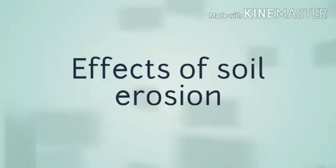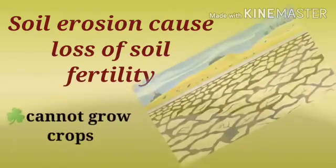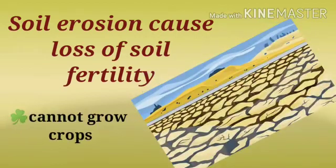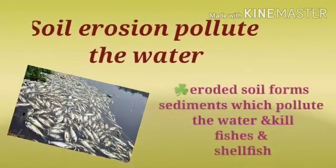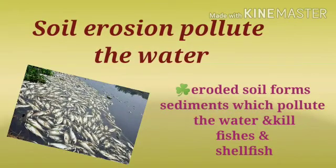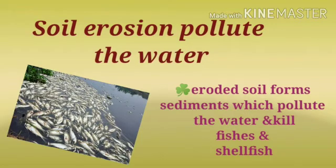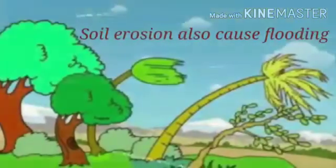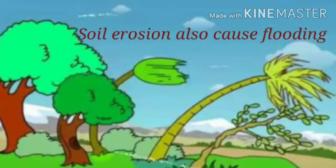Soil erosion causes loss of fertility of soil. It also pollutes the water, which causes the death of fish. That's enough for today's topic.